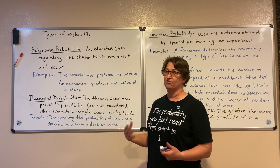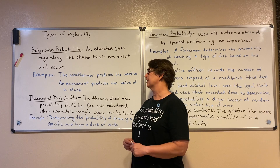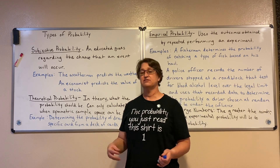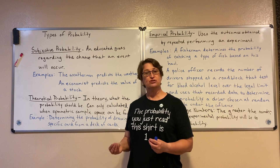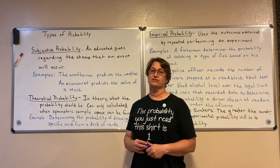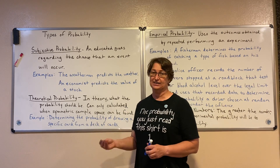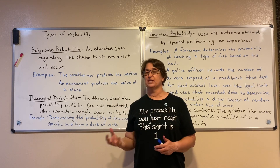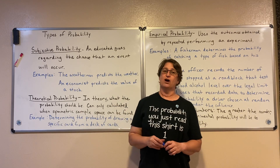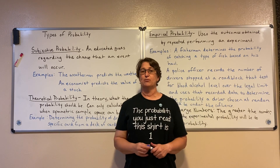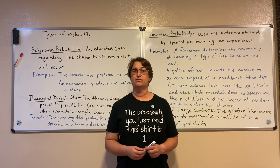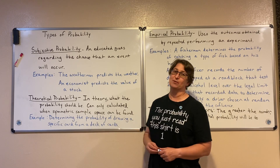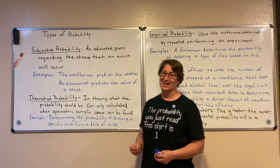Here's another example of subjective probability: an economist predicts the value of a stock. He has some measures he's looking at to help him make that educated guess, so his probability of the value of the stock is probably going to be a lot better than mine, because he has that expertise. So subjective probability is just an educated guess.